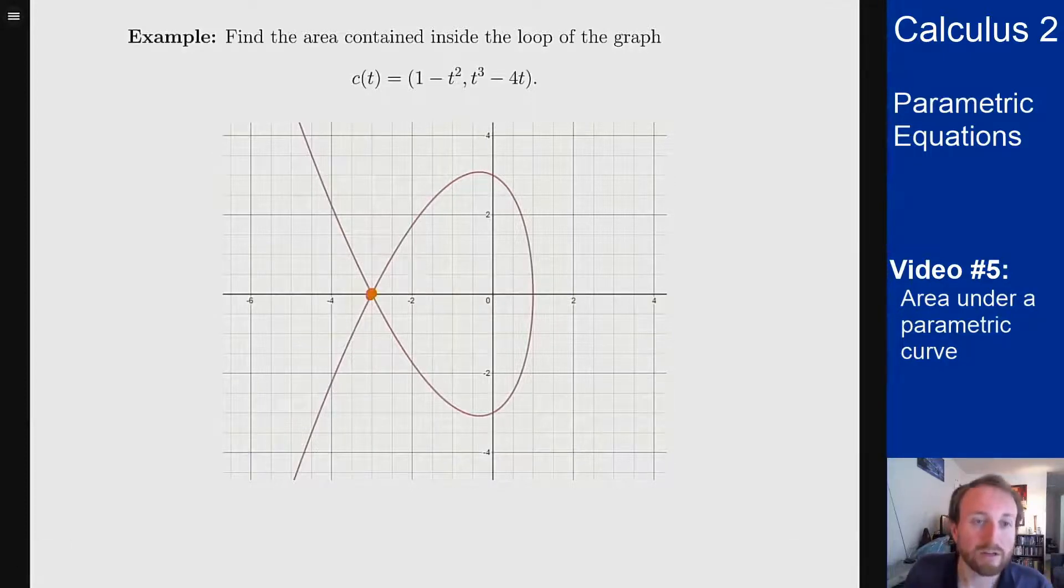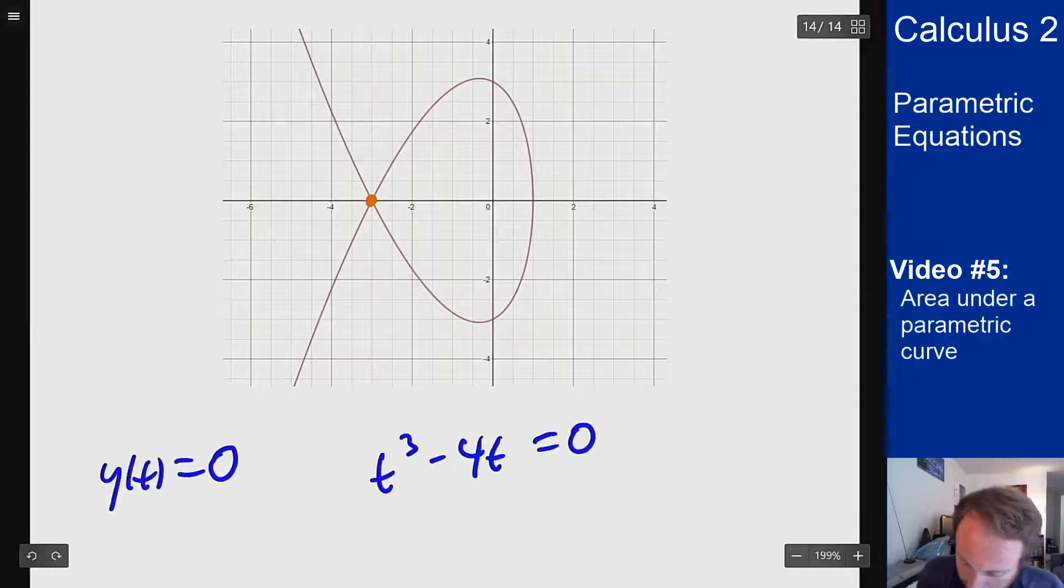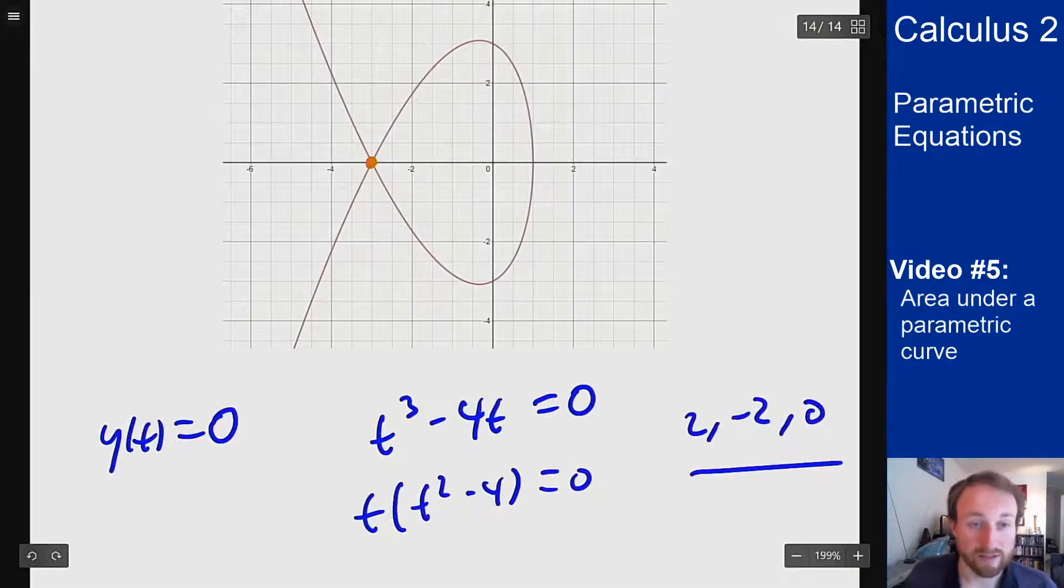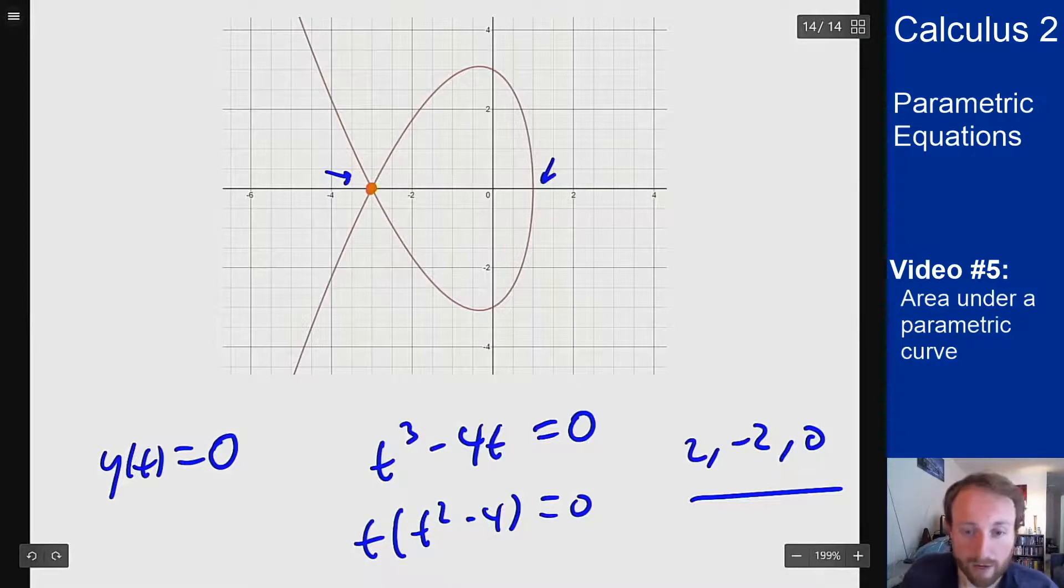So let's figure out this point first. That point occurs when y equals zero because I'm on the axis. So y of t equals zero means t cubed minus 4t equals zero, which is t times t squared minus 4 equals zero. So I get 2, minus 2, and 0 as my three points where this is zero. Which makes sense. I should have two of those here and one of those over on the other side when I pass through that point as well.